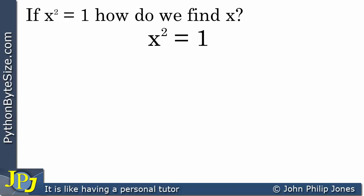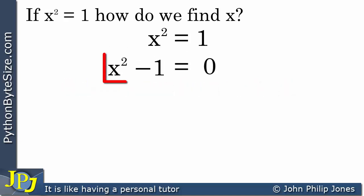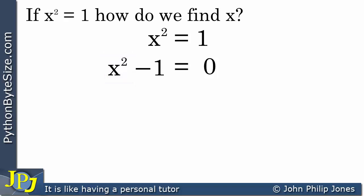To achieve that I can subtract 1 from each side of this equation. The x squared has the 1 subtracted, and the other side of the equation has 1 subtracted from the 1 to give us 0. We now need to look at this and ask: what will give me x squared? I'm going to have two brackets — two things that when multiplied together will give me x squared.